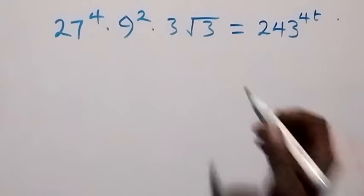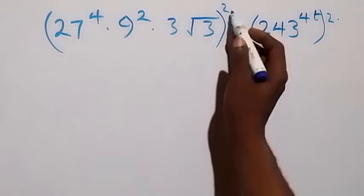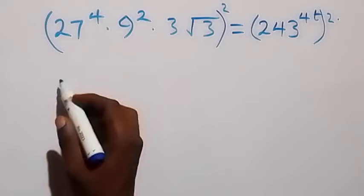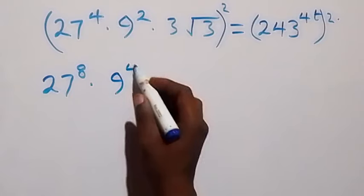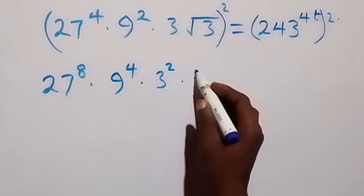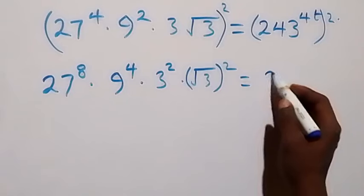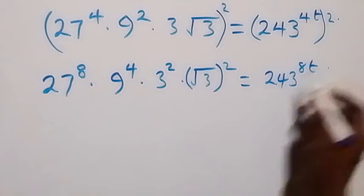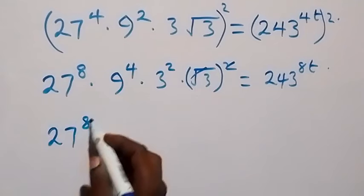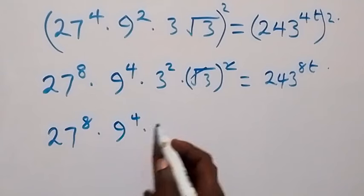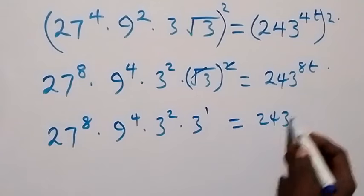We can square both sides again. The square affects 27 — 2 times 4 gives 8 — so we have 27 raised to power 8, then times 9 raised to power 4, then times 3 squared, then times root 3 squared as well, which equals 243 raised to power 8t. The square cancels the square root, and what we have is 27 raised to power 8, times 9 raised to power 4, times 3 raised to power 2, then times 3 raised to power 1, equals 243 raised to power 8t.